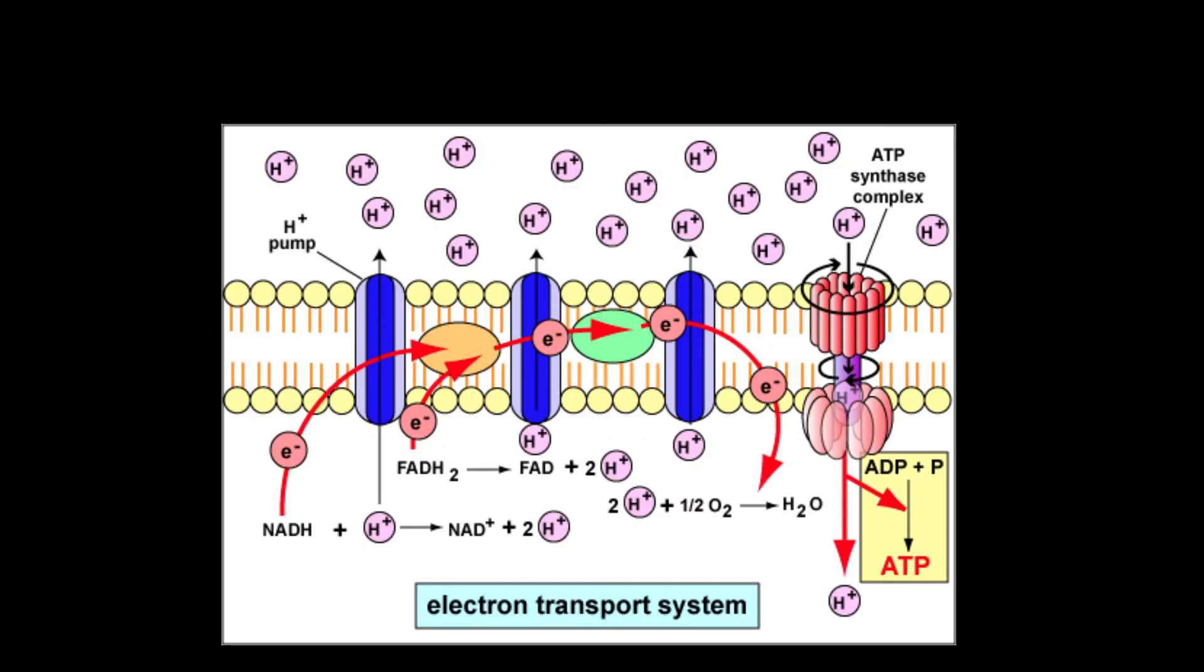Okay, let's get back to the electron transport chain. A hydrogen ion concentration gradient—more hydrogen ions on one side of the membrane than on the other side—has been formed. What's the purpose of that gradient?